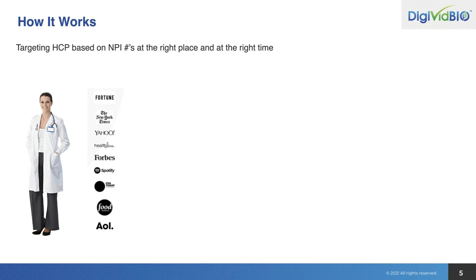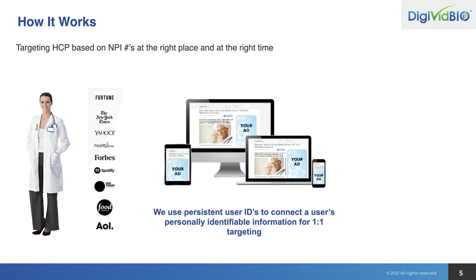Here's another quick breakdown of how it works. We're targeting HCPs based on these NPI numbers — right place, right time. This is just a small sampling of the thousands of websites we can target: think Fortune, Yahoo, Forbes, USA Today, Food Network, and AOL. As they go online, we've got the IDs to connect users to this information and serve your ad campaign to them.